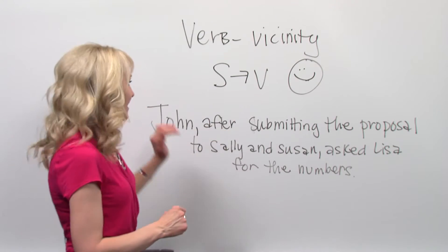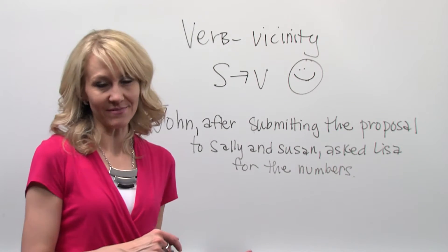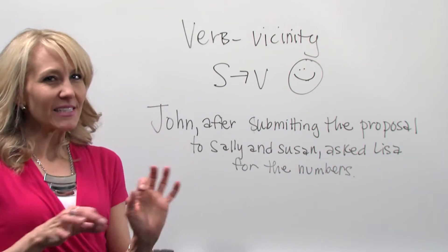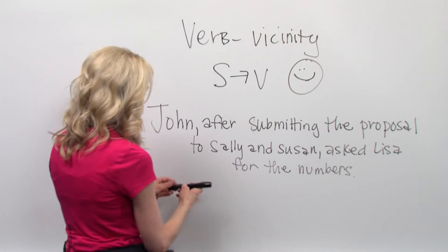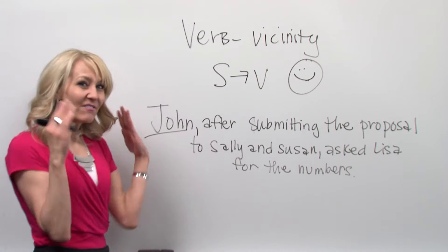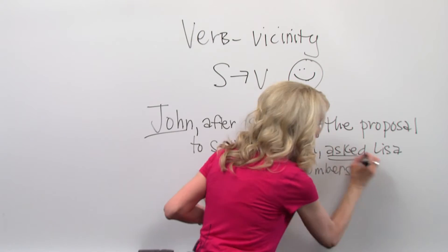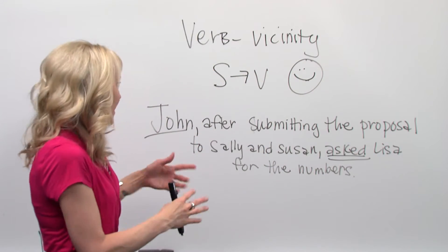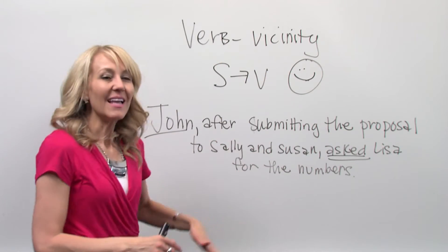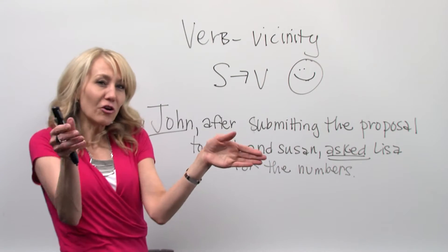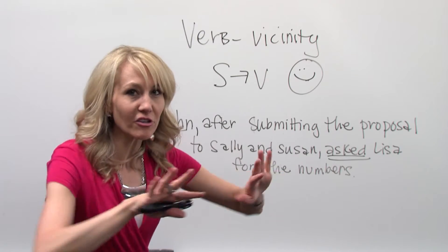Let me read this sentence: 'John, after submitting the proposal to Sally and Susan, asked Lisa for the numbers.' My main subject is John — I'll underline it once — and my main verb is way over at 'asked.' It takes so long to get there. John... asked Lisa for the numbers. This is problematic. John and the verb want to be together — that's when the relationship is most clear.